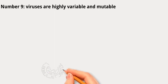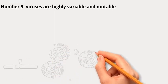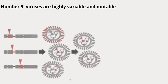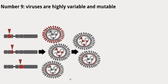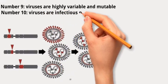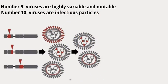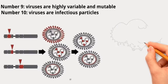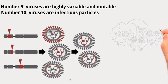Number nine: viruses are highly variable and mutable. Viruses can mutate rapidly due to errors in their replication process. This high mutation rate leads to genetic diversity among viral populations and is one reason why viruses can evolve quickly, potentially making vaccines and antiviral drugs less effective over time.